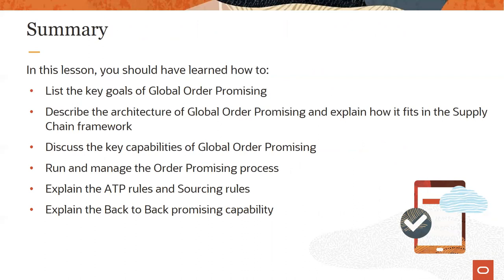So that brings us to the end of this lesson. We've listed the key goals of Global Order Promising, described its architecture and how it fits in the supply chain framework, talked through its key capabilities, and seen how to run and manage the order promising process. We've also explained the key concepts related to ATP rules and sourcing rules, and walked through the back-to-back promising capability of Global Order Promising. Thank you for listening.